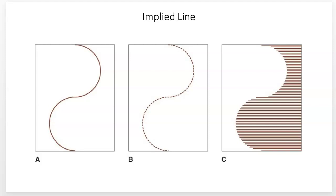Implied line: A is an actual line, B is implied because our eye creates it. It looks like a line, but it has little spaces in between — our eye creates the line. That's an important thing to distinguish: are the lines you're seeing in a piece implied or actual?